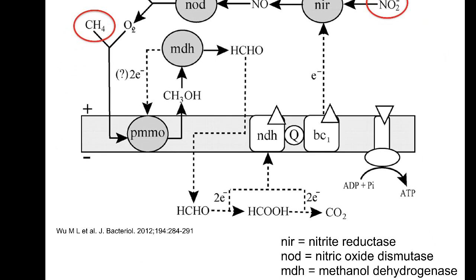You go through a particulate methyl monooxygenase, then through a methanol dehydrogenase. So from methane you make methanol, and methanol dehydrogenase gives you formaldehyde. This can go through the membrane and now you have a choice: you can use the formaldehyde to create your cell carbon, or you can extract the electrons from it.